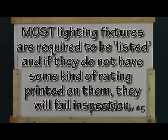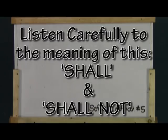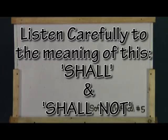Listed and approved mean about the same thing. I'd also like to define what 'shall' and 'shall not' means in the code book. 'Shall' means absolutely, positively has to be done this way. 'Shall not' means you won't do it — you can't do it this way. It's an absolute no-no.